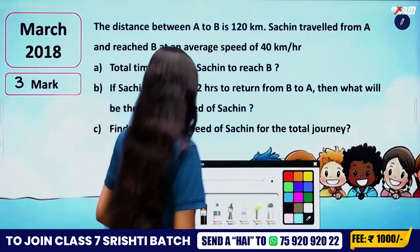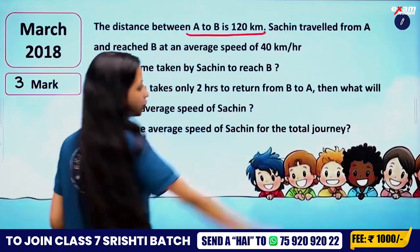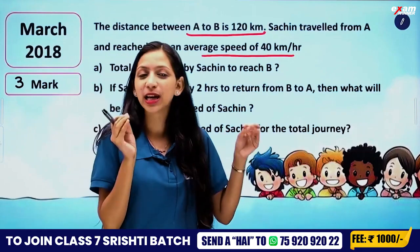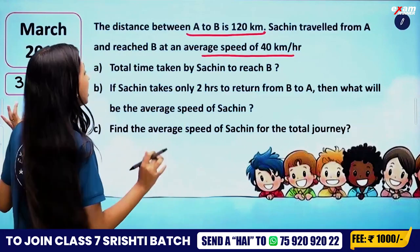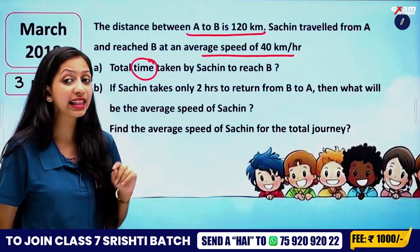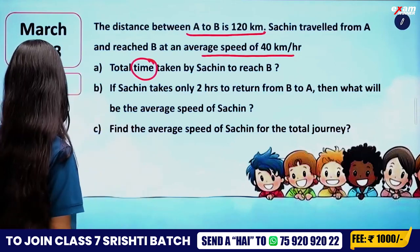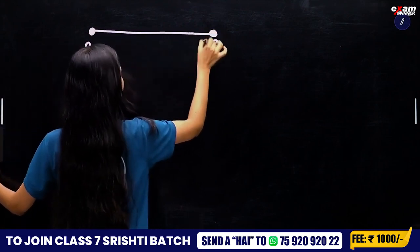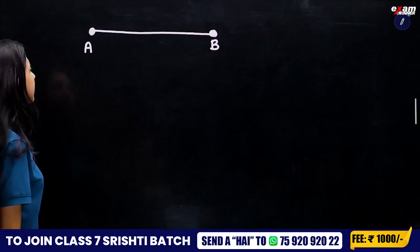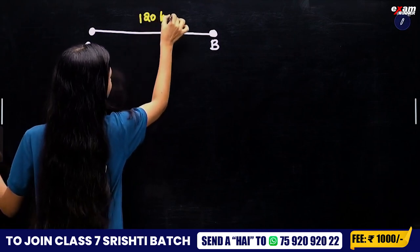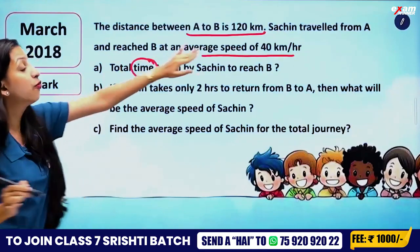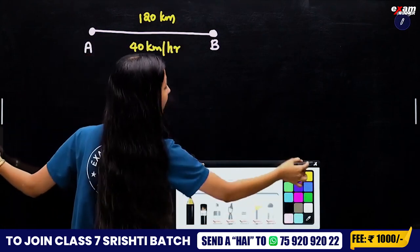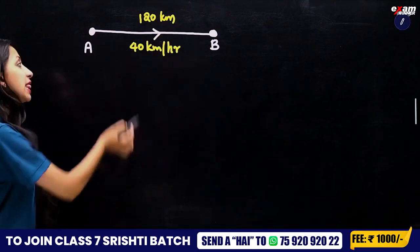The distance between A to B is 120 km. Traveling from A to B at 40 km per hour. The distance is 120 km and the speed from A to B is 40 km per hour.